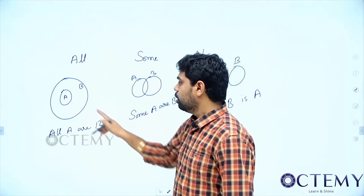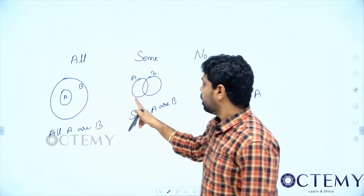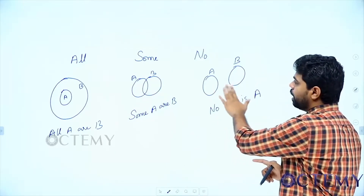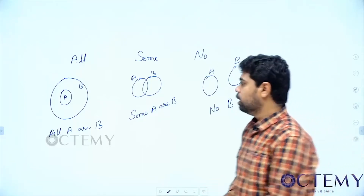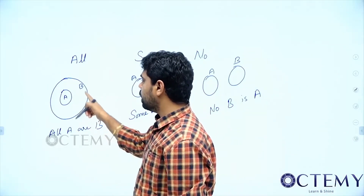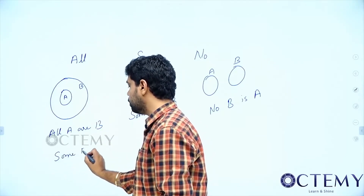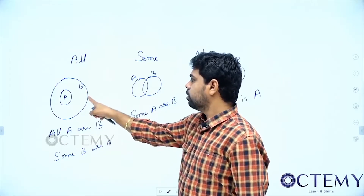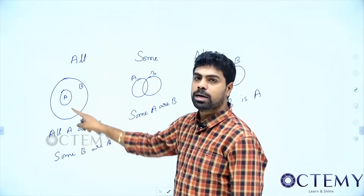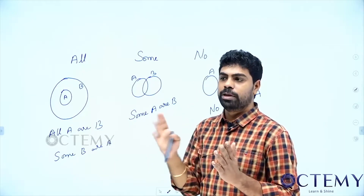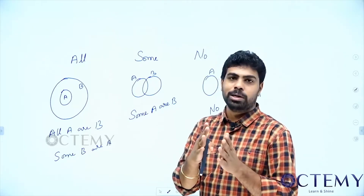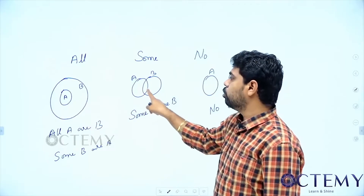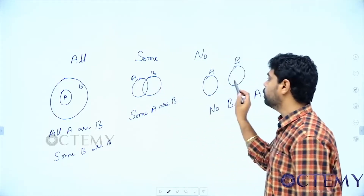So to summarize: all A are B means every part of A should be inside B. Some A are B means both should have an intersection. No A or B means we should not have any relation between A and B. There are many ways to represent a Venn diagram, and some B or A can also be written as an alternative. When we go for negative case or possibility, I will tell you about alternative cases.